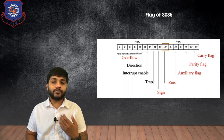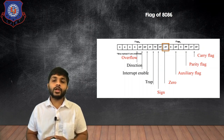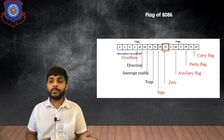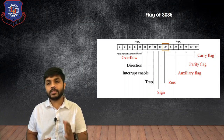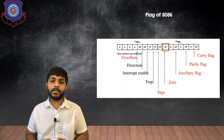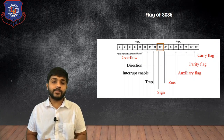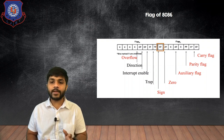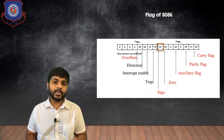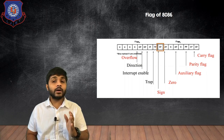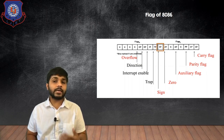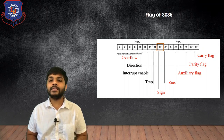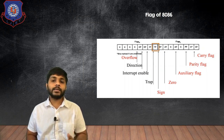The Zero Flag is set after performing any arithmetic and logical operation if all the bits in the answer are zero; otherwise it is reset. The Sign Flag is set if the MSB of the result is 1, meaning the answer is negative. If the MSB is 0, the answer is positive and the sign flag is reset.